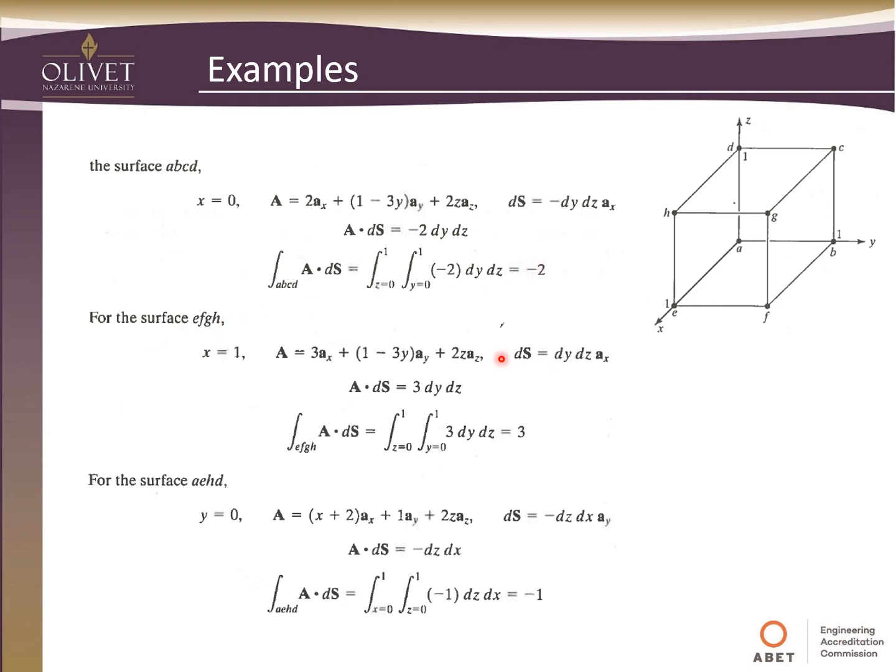So now if we do the EFGH, so EFGH, that's this front side. It's the same dy, dz, except this time it's positive because that vector, surface vector is pointing out. And so it's in the positive direction, both for y and z. So again, we do the same thing.